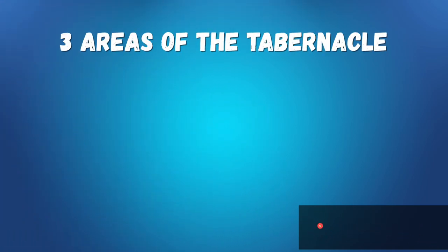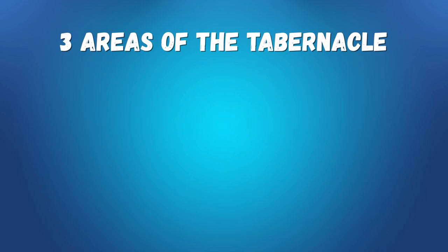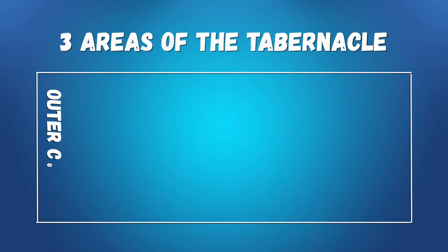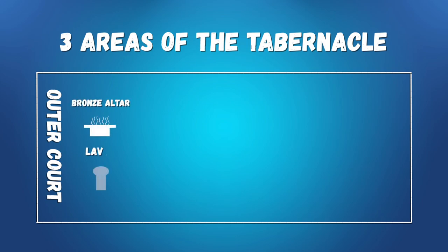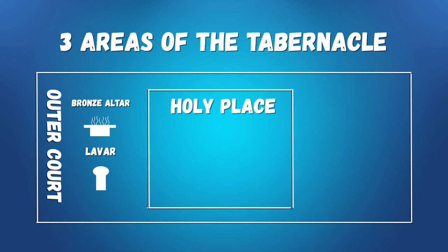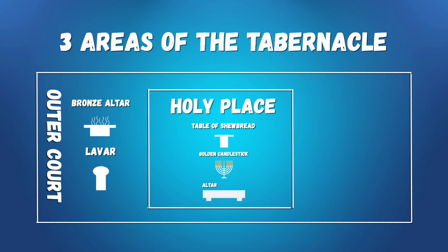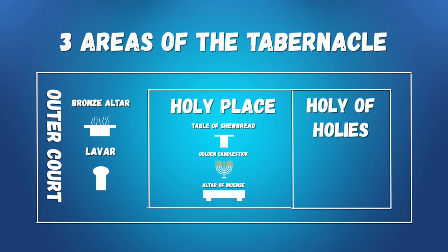The tabernacle consisted of three distinct areas. The first area was called the outer court. Inside this outer court was a bronze altar and a laver for washing. The second area, called the holy place, was where the priest ministered on a daily basis. Inside the holy place was the table of showbread, a golden candlestick, and an altar of incense. And the third and final place was called the holy of holies. Only the high priest was allowed to enter here once a year on the day of atonement. Inside the holy of holies was the ark of the covenant.